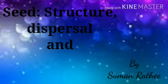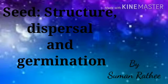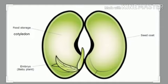Let us study about the structure of a seed. A seed has an outer covering called seed coat. This seed coat protects the internal parts of a seed. There is an embryo present inside the seed, which is also known as a baby plant.